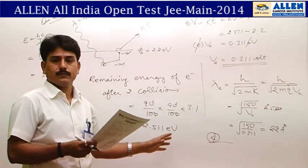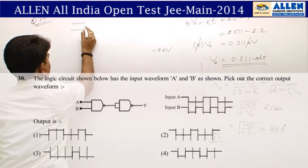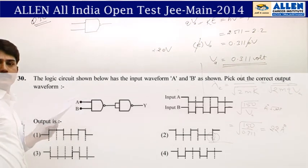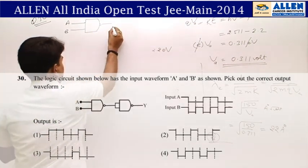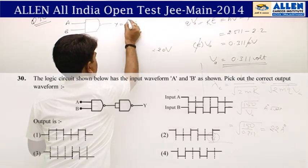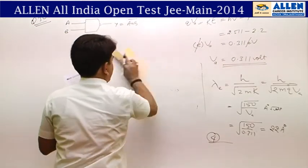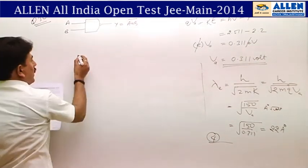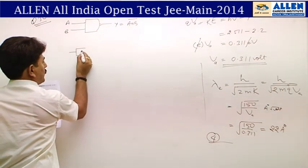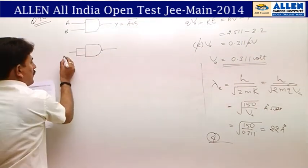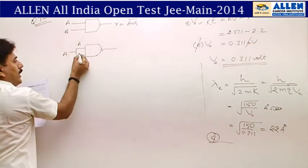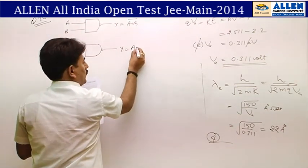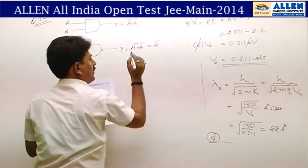Question number 30: a symbol is given and this is the symbol of a NAND gate. With input A and input B, the output is Ā·B̄ (i.e., A·B whole bar). If both inputs are made the same — both A — then output Y = A·A whole bar = Ā.